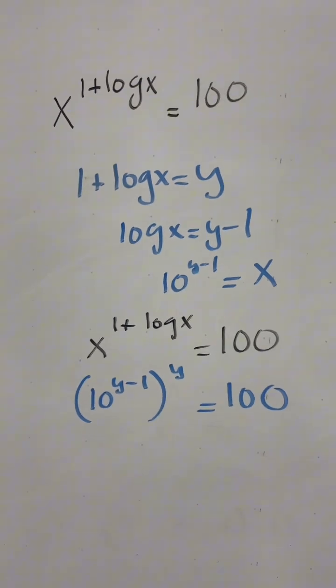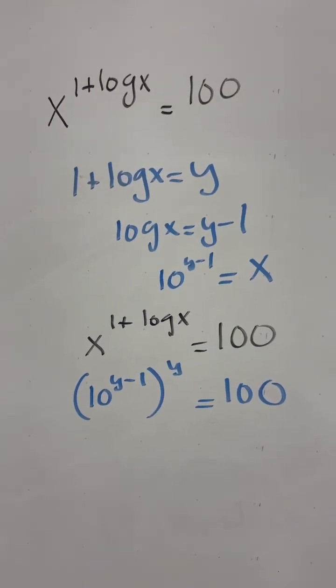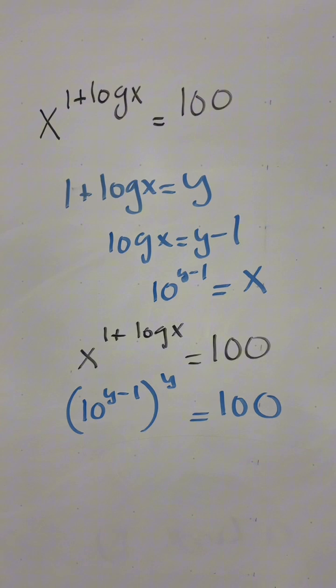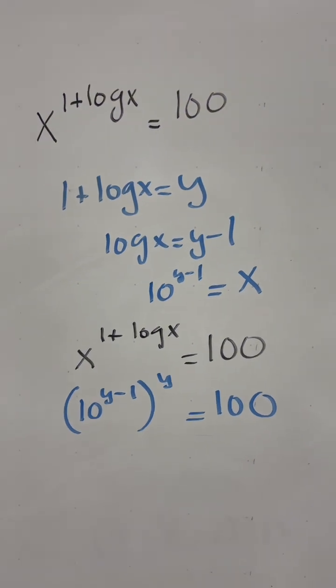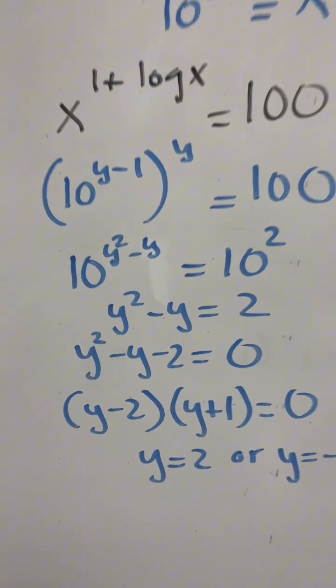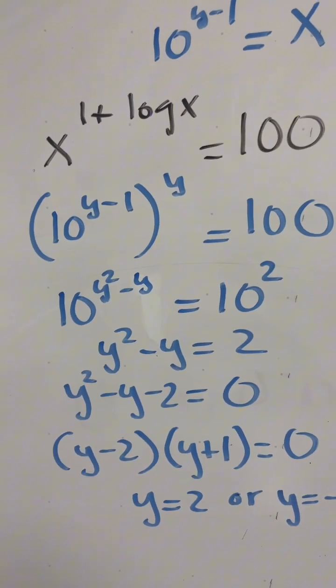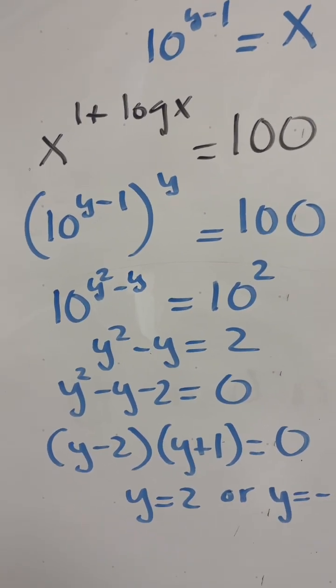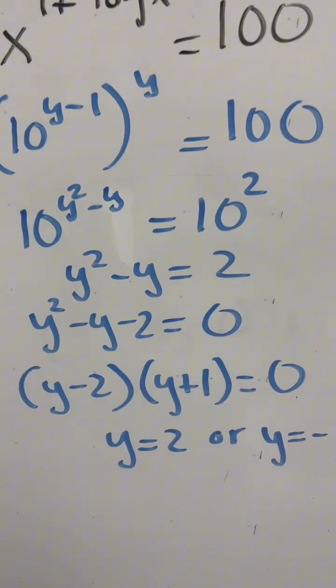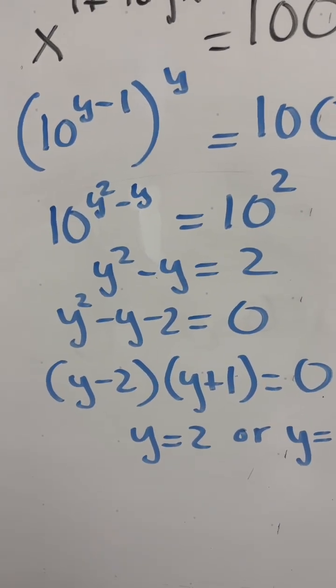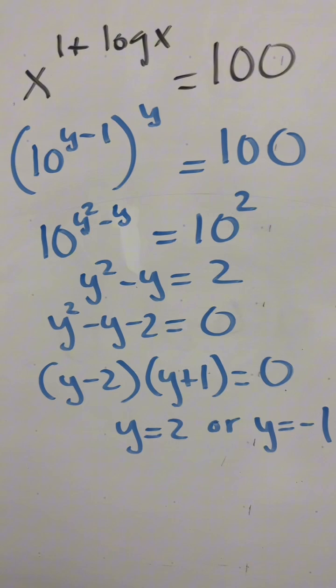After making the substitutions for x and 1 plus log x, we have 10 to the power of y minus 1 to the power of y is equal to 100. Now we're going to multiply the exponents and change the base on the right side of the equation to 10, and we end up with 10 to the power of y squared minus y is equal to 10 squared.